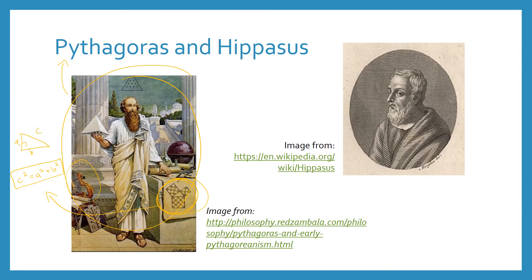One of Pythagoras' followers was this guy called Hippasus. So this is him here, and Hippasus set out to prove that, or to find a fraction where you could write the square root of two as a rational number.